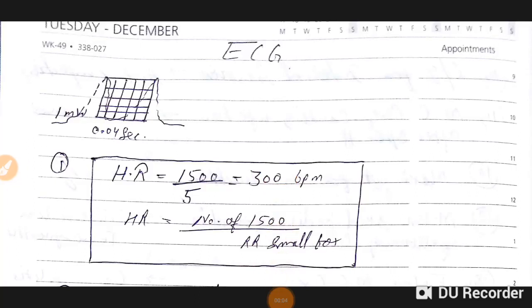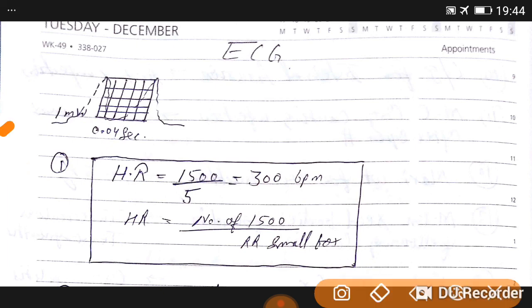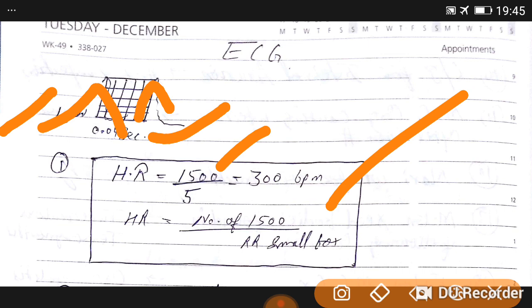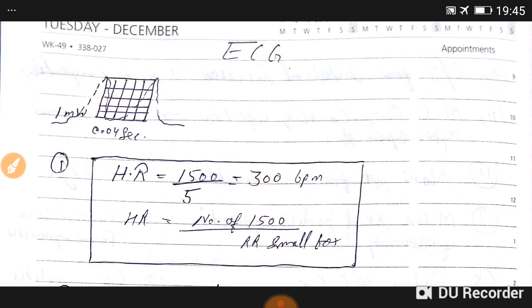Good evening doctors, welcome again. Our today's topic is normal ECG or some ECG related MCQs. Firstly, you see the box, five small boxes on the upper side shows one millivolt and it's 0.04 seconds. Heart rate is calculated by 1500 divided by RR interval. Five small boxes divided by 1500 equals 300 beats per minute. Heart rate is calculated by 1500 divided by RR in small boxes.